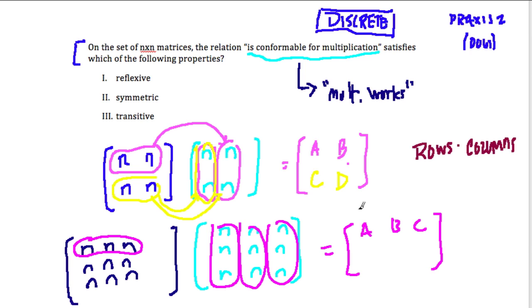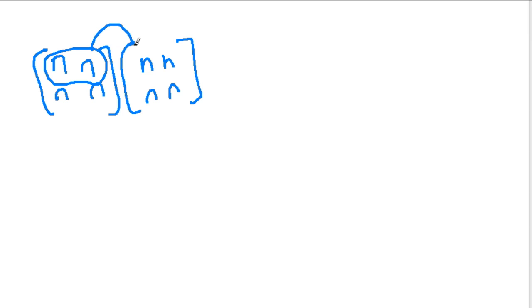Now, these matrices are conformable with each other. Why? Because the number of columns here matches the number of rows here. Let me show you what I mean as a counterexample. This letter n has to match with this letter, and this letter n has to match with that letter. And the only way that can happen is if these two rows exist for these two columns.